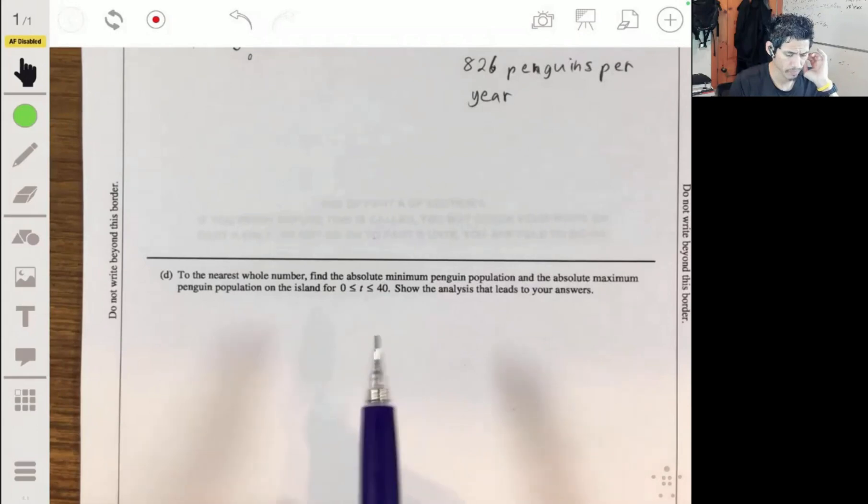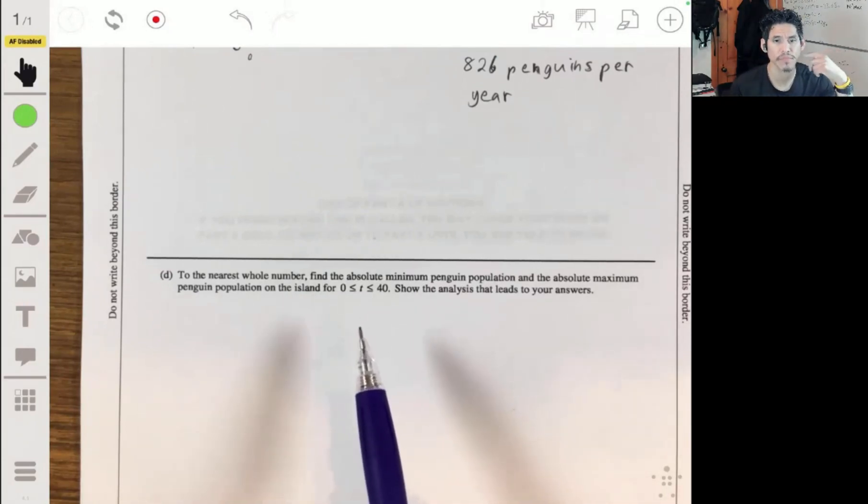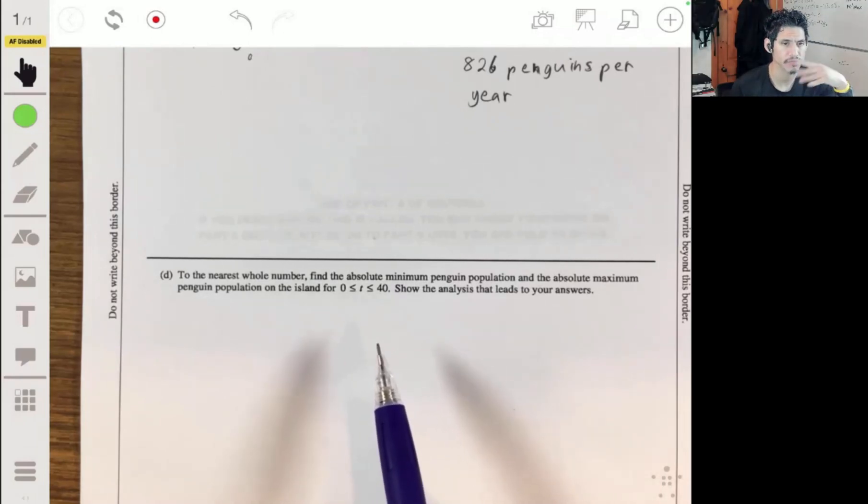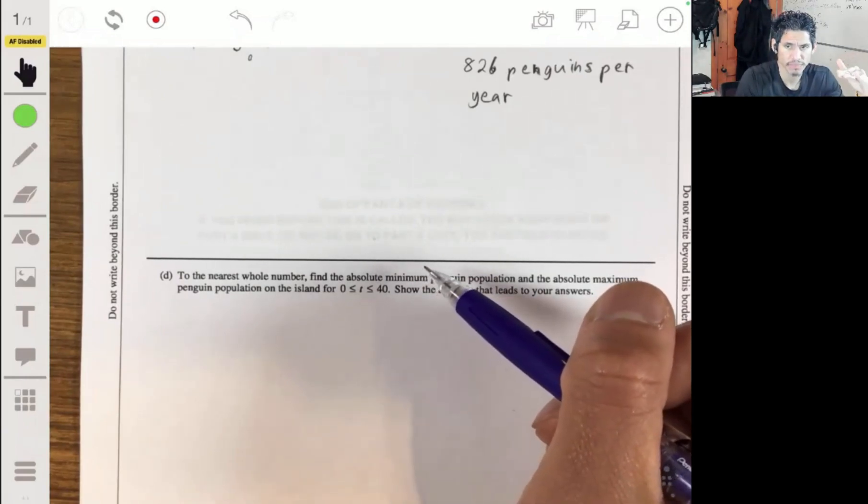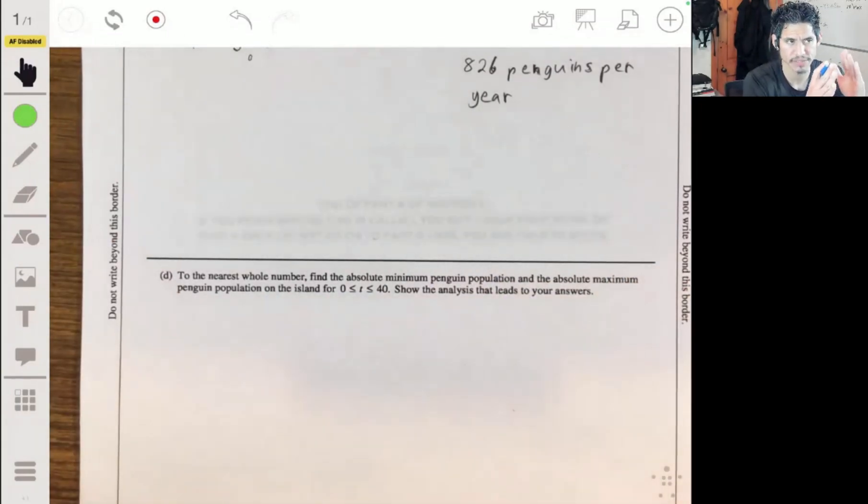Part D: to the nearest whole number, find the absolute minimum penguin population and absolute maximum penguin population on the island for time from 0 to 40. This is going to require thinking more critically. We can find the minimums with the general strategy from unit three with critical values, derivatives, and all that. The derivative tells you the behavior of the function - if it's increasing, decreasing, or stabilizing.